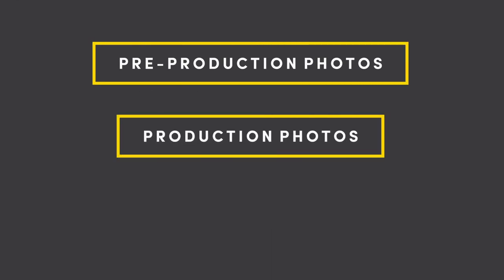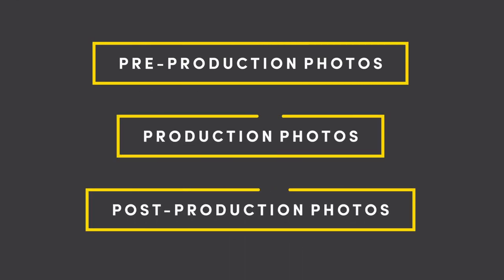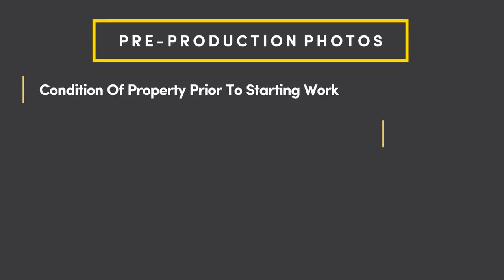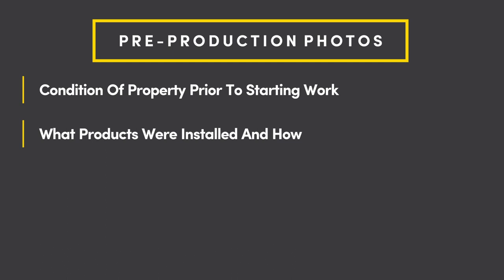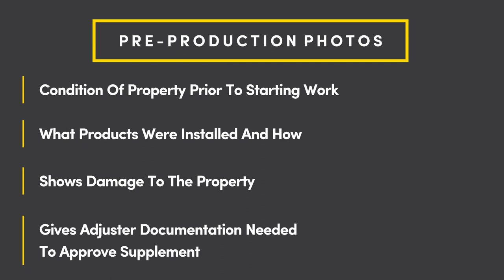Pre-production photos show the condition of the property prior to starting work. They show what products were installed on the home and how they're installed, and they document the damage of the property. They'll act as a foundation to write your estimate when you get back to the office, and will give the adjuster the supporting documentation they need to approve your supplement.